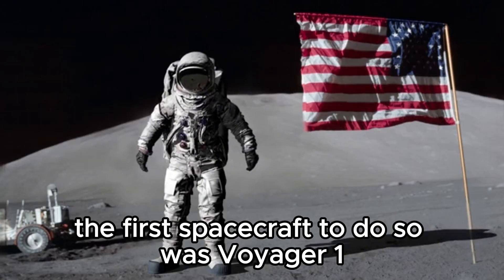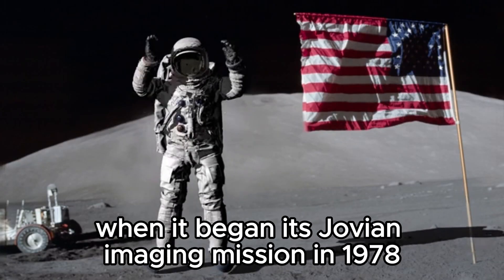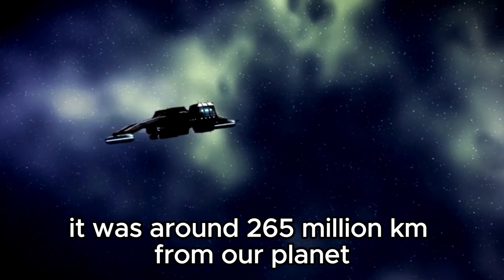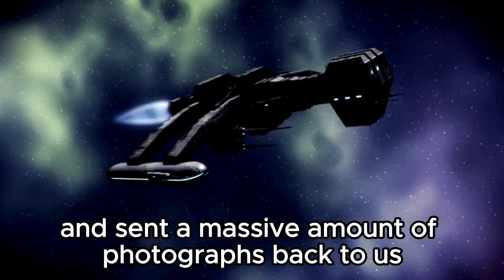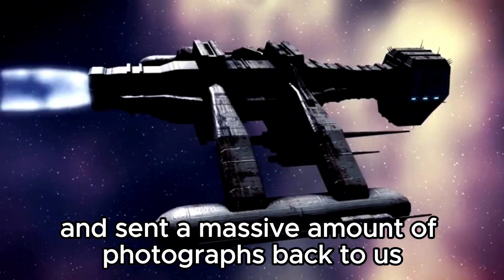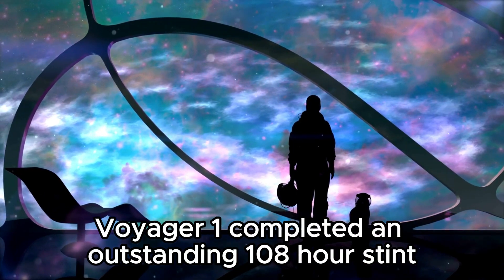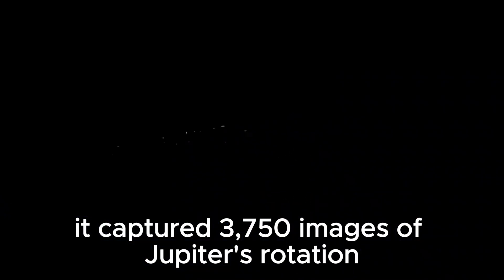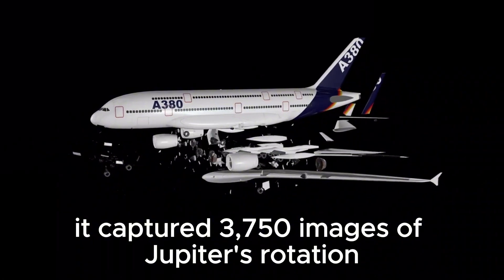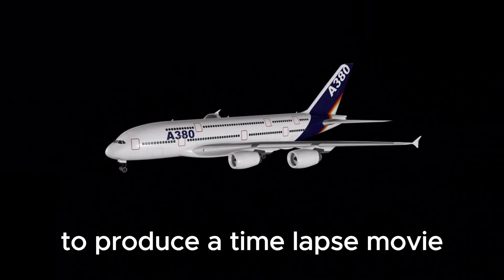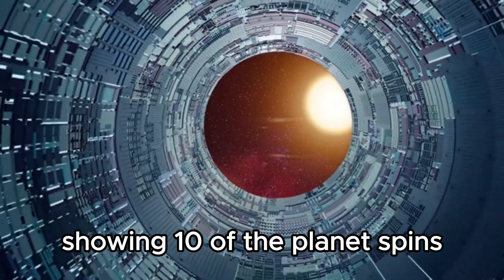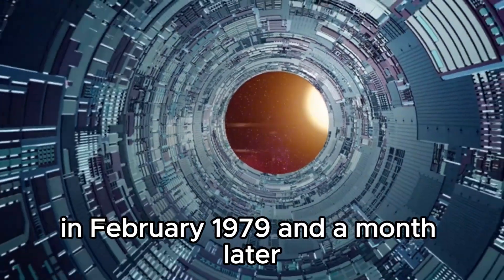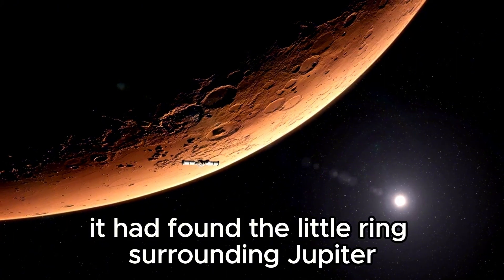The first spacecraft to do so was Voyager 1 when it began its Jovian imaging mission in 1978. At that time, it was around 265 million kilometers from our planet and sent a massive amount of photographs back to us. Voyager 1 completed an outstanding 108-hour stint beginning in January 1979, during which it captured 3,750 images of Jupiter's rotation to produce a time-lapse movie showing 10 of the planet's spins. It passed through the Jovian moon system in February 1979, and a month later, it found the little ring surrounding Jupiter.